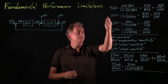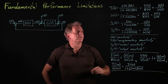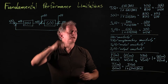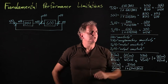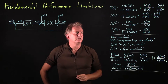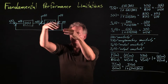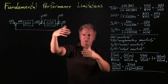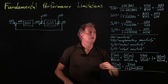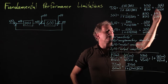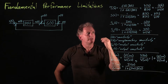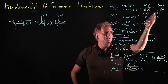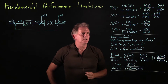We identified the transfer function from R to Y as being G of S times D of S over 1 plus G of S times D of S. We argued that in a similar way you can unwind these block diagrams and derive the transfer function as the forward gain over 1 minus the loop gain for any of these other transfer functions.